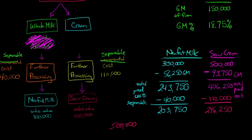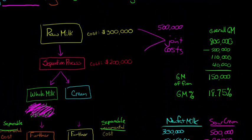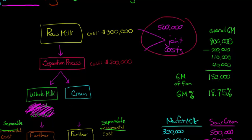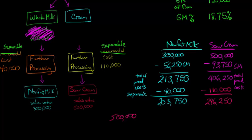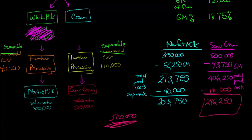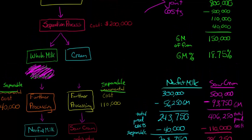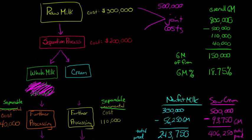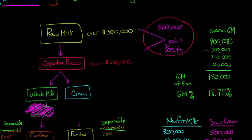So after all these calculations, we have found a way to allocate the joint costs. The nonfat milk division is going to get allocated $203,750 of that $500,000 in joint costs, and the sour cream product line is going to get allocated $296,250. Of course, when evaluating each product line, they would also consider the separable costs. This video is focused on how we allocate those $500,000 in joint costs.